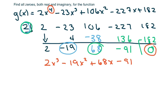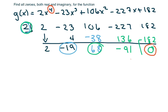When I put this in the calculator I also notice that it crosses the graph at 3 and a half, which is seven halves. So to save space, I'll erase this and do the same synthetic division putting seven halves in.